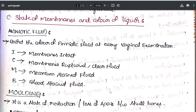The third component is the state of membranes and color of liquor — the color of the amniotic fluid recorded at every vaginal examination. 'I' means membranes intact; 'R' means membranes ruptured with clear fluid; 'M' means meconium-stained fluid; 'B' means blood-stained fluid.